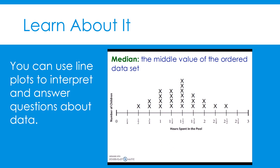Now, let's find the median. The median is the middle value of the ordered data set. In a line plot, the data is already put in order. In order to find the median, we can start from the outside and cross off a value from each side, one after the other, until we narrow it into the middle value. It seems like we have two values left; however, they are both the same value. Therefore, those two values are the median. The median is one and one-half, the same as the mode.